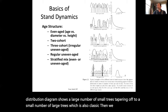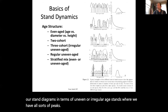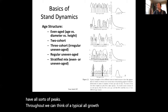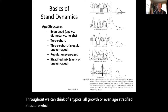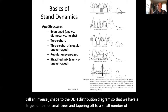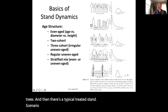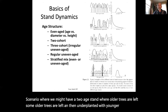We can also think of stand diagrams in terms of irregular age stands where we have all sorts of peaks throughout. We can think of a typical old growth or even-age stratified structure, which will have an inverse J shape to the DBH distribution diagram — a large number of small trees tapering off to a small number of large trees. Then there's a typical treated stand scenario, a two-aged stand where some older trees are left and then underplanted with younger trees. This two-aged stand distribution is also common following wildfires.